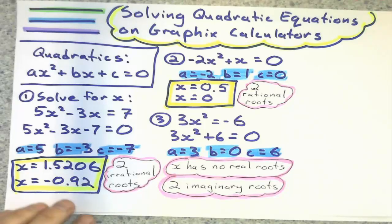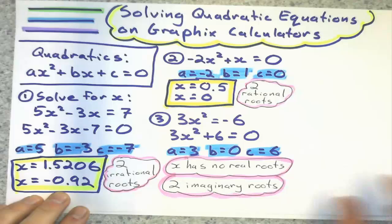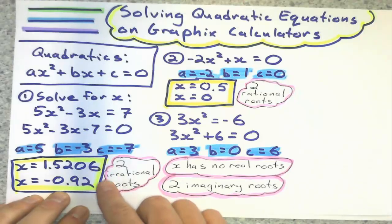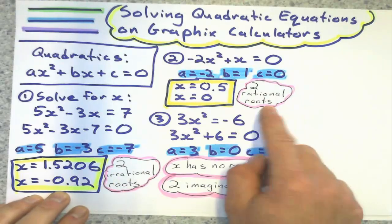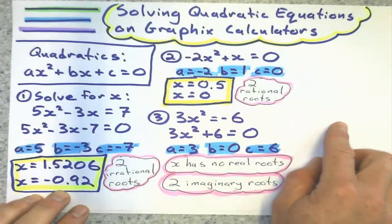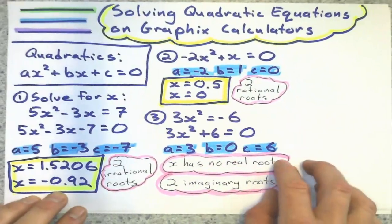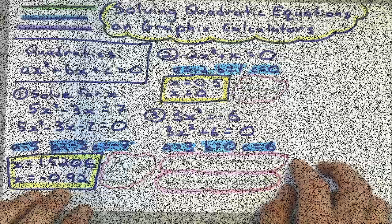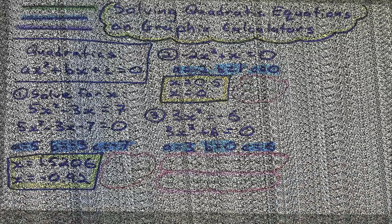So I think those are pretty much the different cases that we're going to have using the graphics. We're going to have two irrational roots. Two rational roots. We could have one answer, but I didn't give any examples. Or, it'll tell you, hey, we can't have any real number answers for that one. That's it. That's it for me.